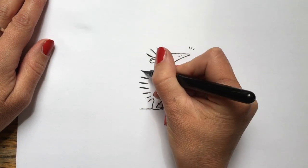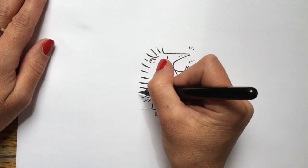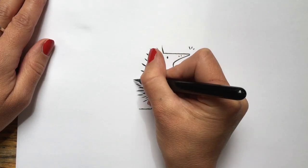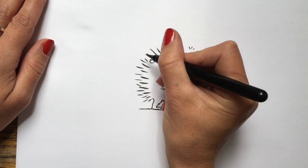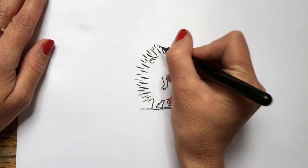You have to do them quite quickly so you get a nice sort of smooth line. If you do them slow they start to get a bit wobbly. There we go. He's beginning to look like a hedgehog, isn't he?